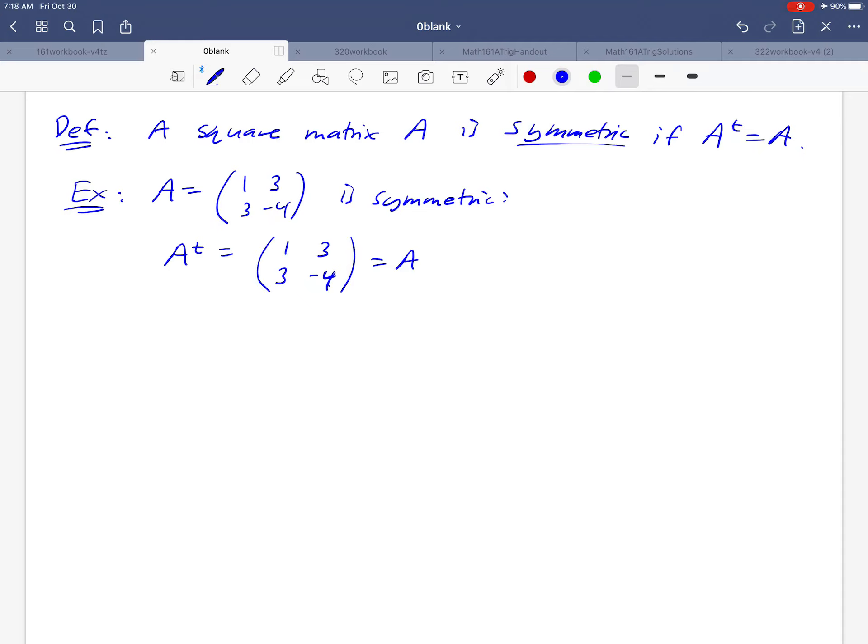What would an example of a matrix that's not symmetric be? Well, how about 1, 2, 3, 4? Because if we took the transpose of that matrix, we would get 1, 3, 2, 4, the rows become the columns, and that's not the same as the matrix that we started with. So what does it take for a 2x2 matrix to be symmetric? What made this work was the fact that the two off-diagonal entries had to be the same. The fact that those numbers were the same is what made this a symmetric matrix.